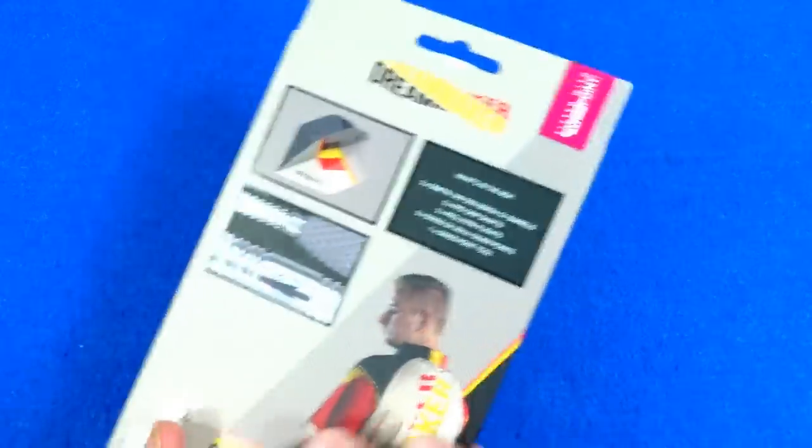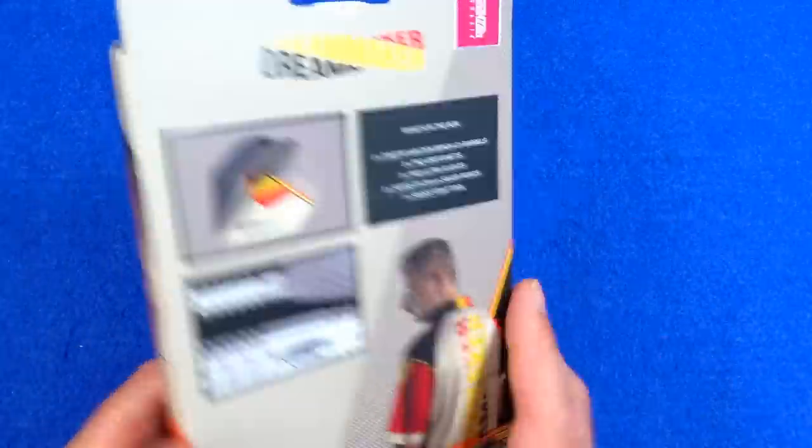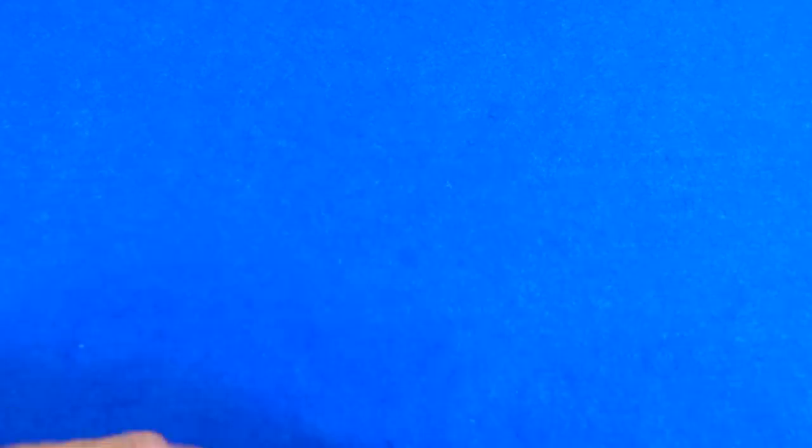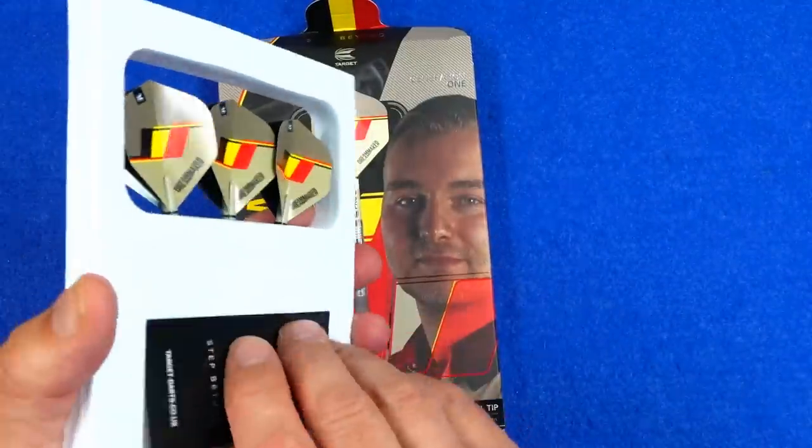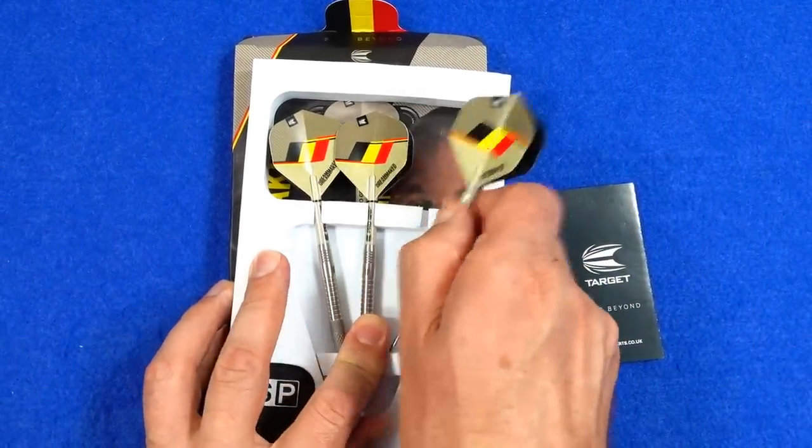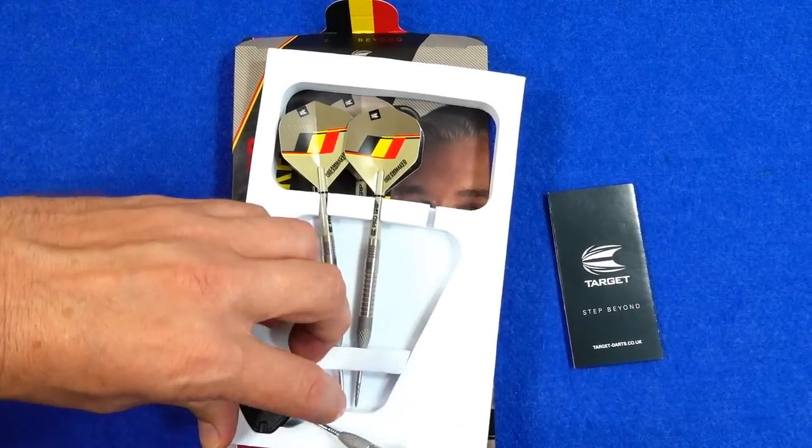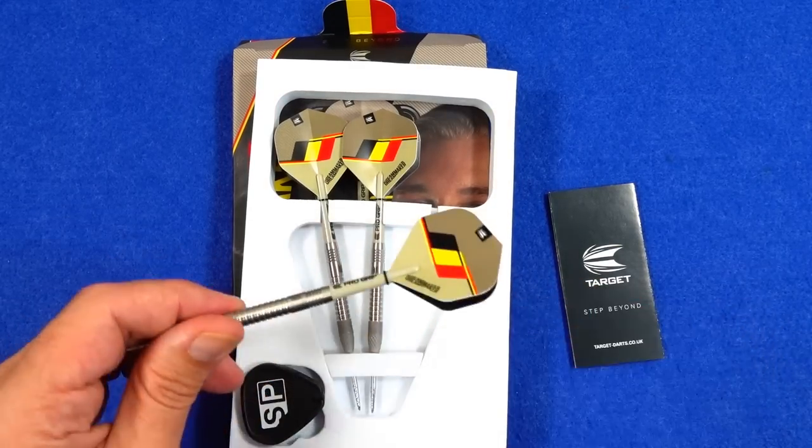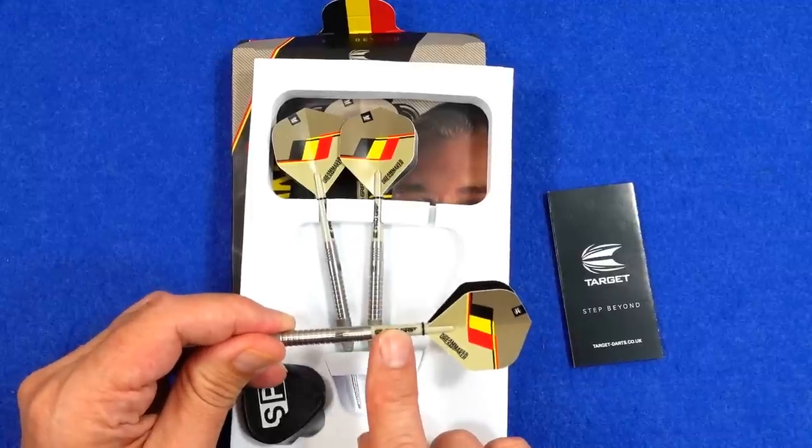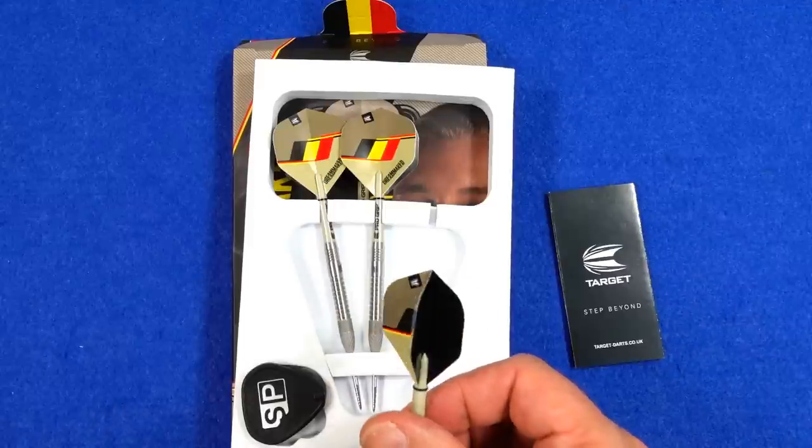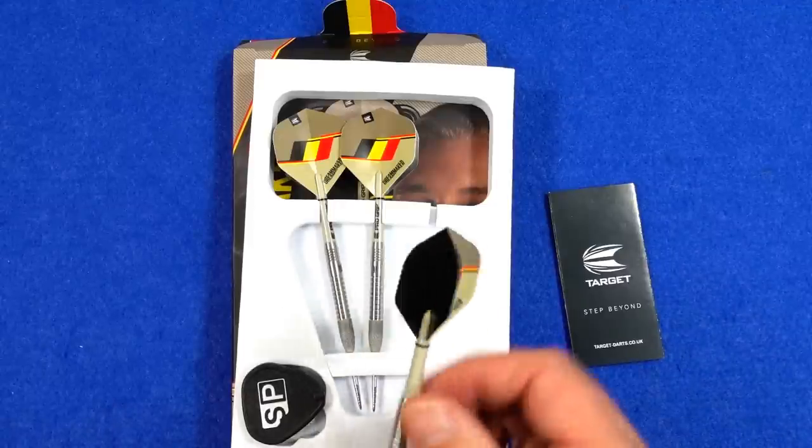As you can see, they come in the standard Target cardboard packaging with info on the contents and pictures of the darts. Just pull that flap and inside you've got a foam insert holding the darts. On the back, you've got your Target guarantee leaflet. As I said, they're fitted with the Swiss Point and it also comes with the Swiss Point tool. They're the Swiss DX points, and they're also fitted with the Pro Grip short stems in sand colour. And you've got the Dimitri Vandenberg Pro Ultra No. 6 small standard flights.